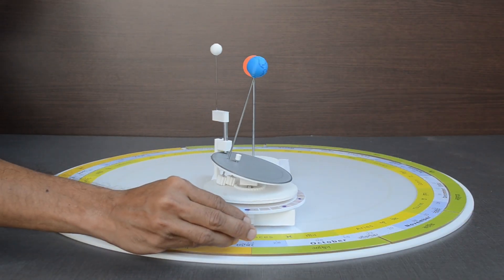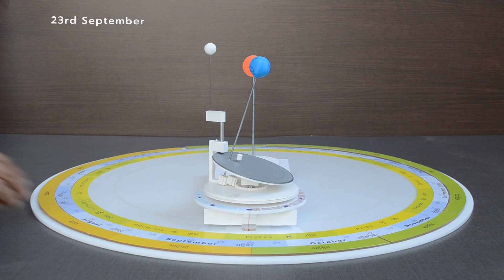On 23rd September, there is another equinox. This is also the start of Ashwin month.